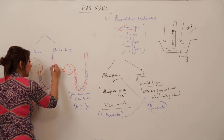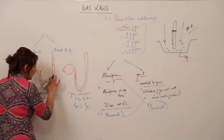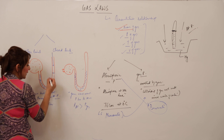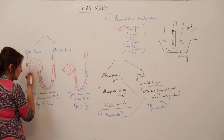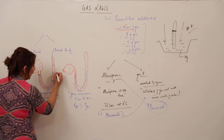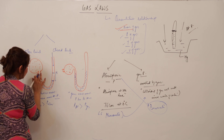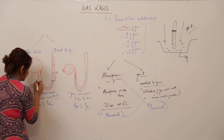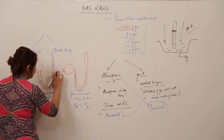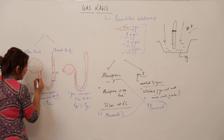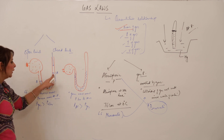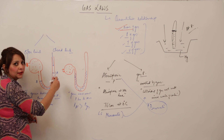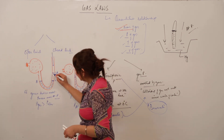In the open limb manometer, the atmosphere exerts pressure on the open limb, pushing the mercury level down in the longer limb. Initially, mercury was at level A in the longer limb and level B in the shorter limb. When pressure is applied, the mercury in the longer limb moves down and rises in the shorter limb.